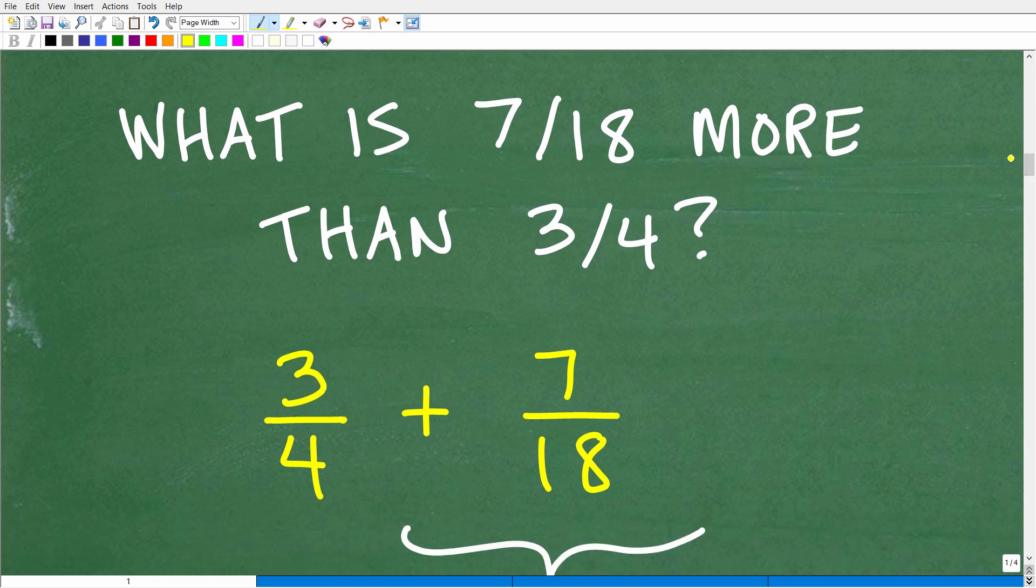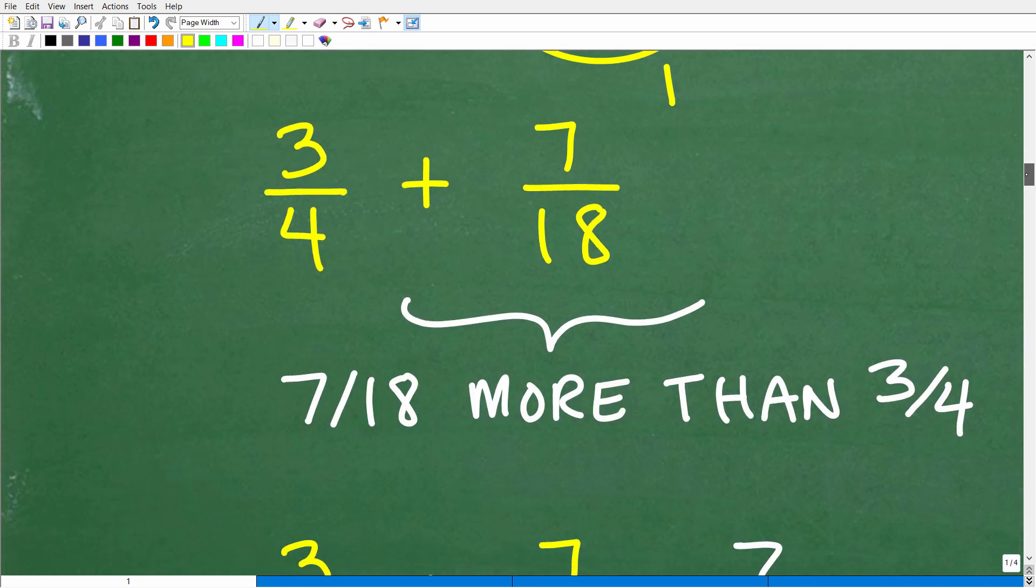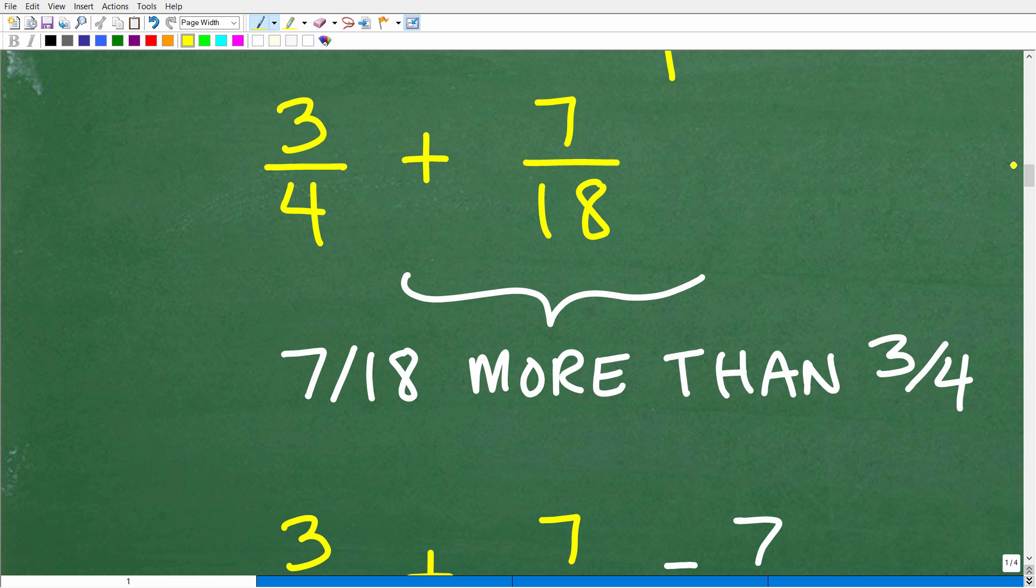Sometimes if you replace fractions or numbers that are a little bit more complicated with easier numbers, and then think about what that means, it's generally a path to figuring out the solution. So for example, instead of 7/18 more than 3/4, what about 3 more than 1? 3 more than 1, what does that mean? Well, if I have 1, and then I have 3 more, it looks like we want to add 3 to 1, right? So we're just basically adding these two numbers, and because we don't have any negative numbers here, we're not dealing with a subtraction situation, it looks like all we need to do is simply add these fractions, and that is exactly what we need to do in order to figure this problem out.